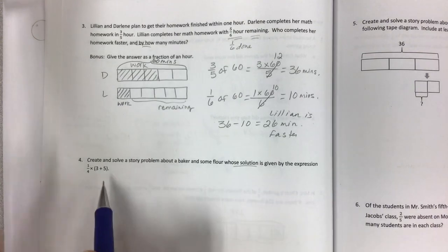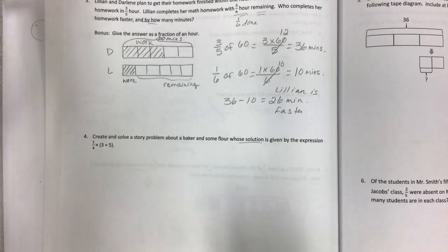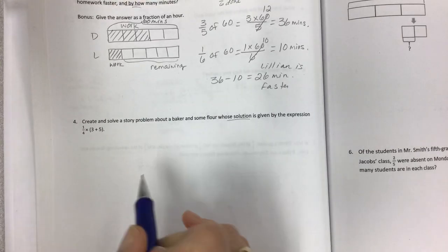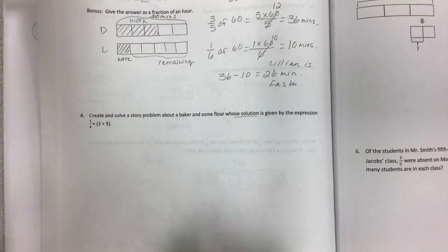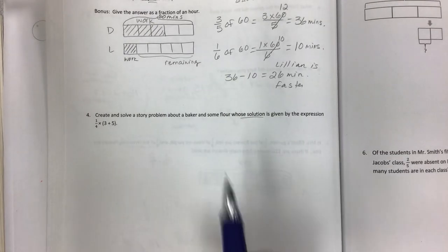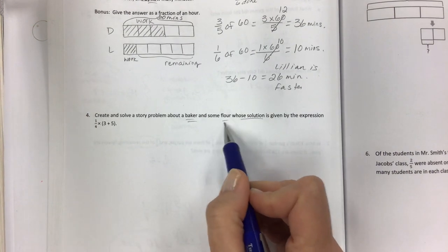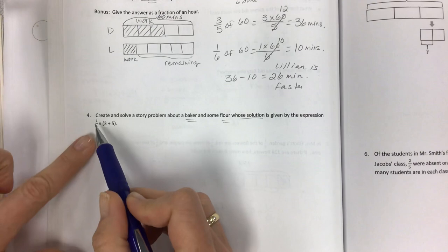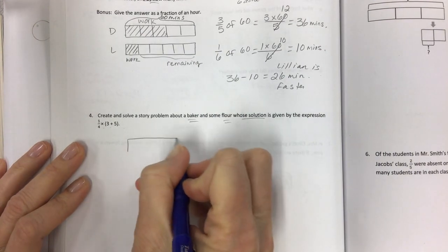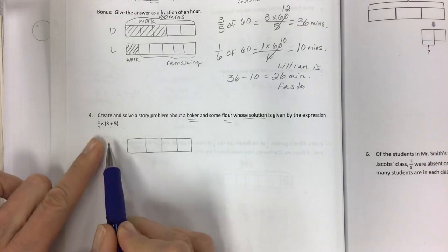I know you guys don't like it when I do this, but I'm not going to give you the story. I want you to create your own story problem. But I will show you just a little something to help you think about it. I don't like to give away any wording for this story problem because you guys are so much more creative than I am. Your word problems are way, way better. But I will show you a tape diagram that you can use. Create and solve a story problem about a baker. Make up a baker. And some flour whose solution is given by the expression 1/4 of (3 + 5). I will show you how to do the tape diagram. The 4 is a clue here that your tape diagram should be in 4 parts.